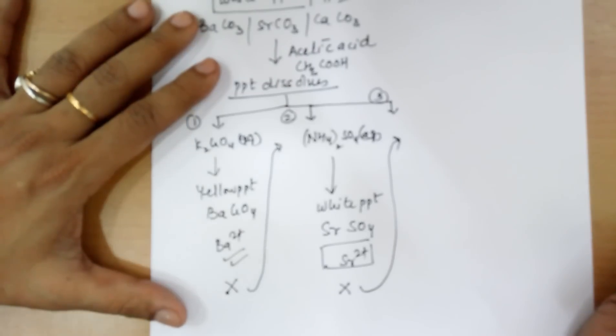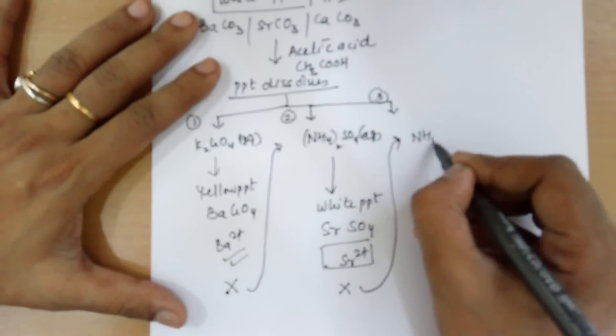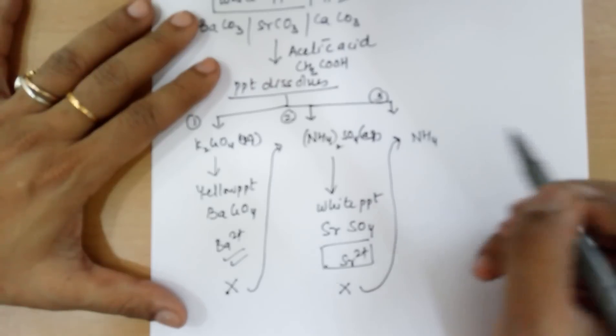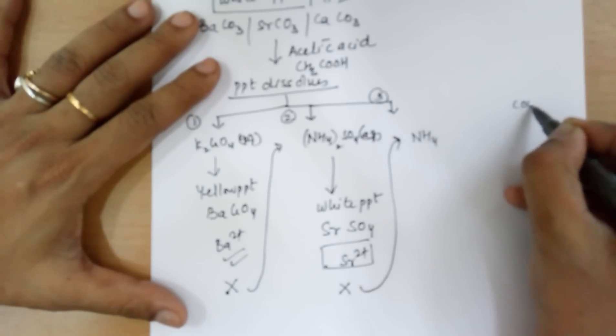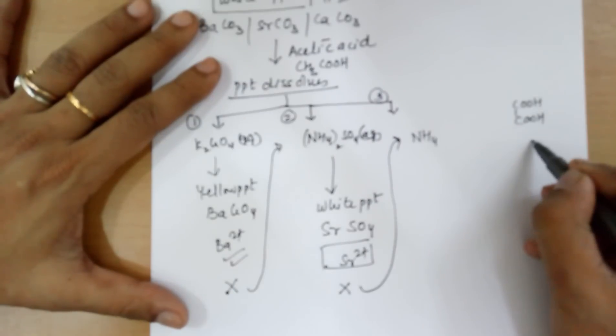Once you enter the third part of the solution, to this solution, you need to add ammonium oxalate. Now, before I move to the formula, oxalate ion is from oxalic acid, which is this. So, the oxalate ions are these.